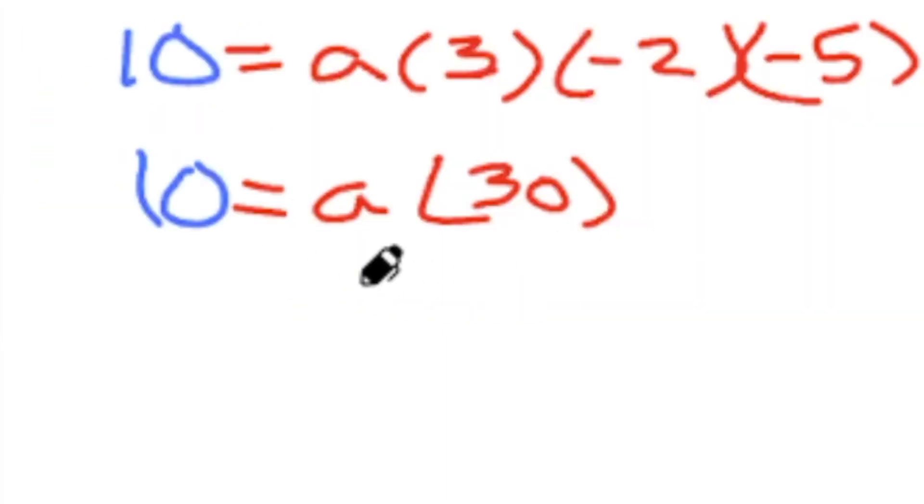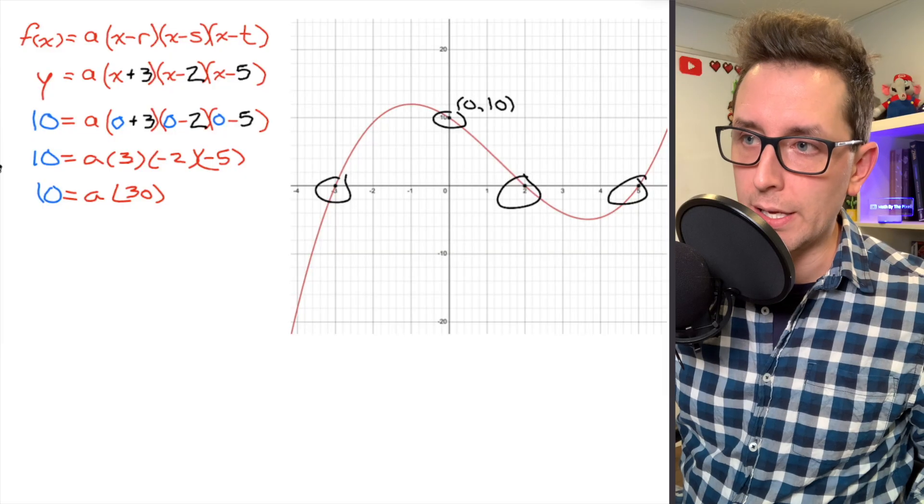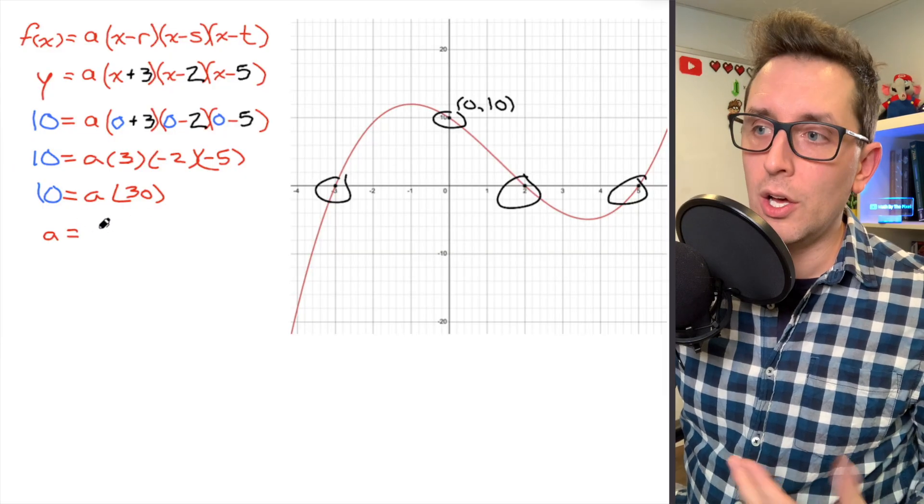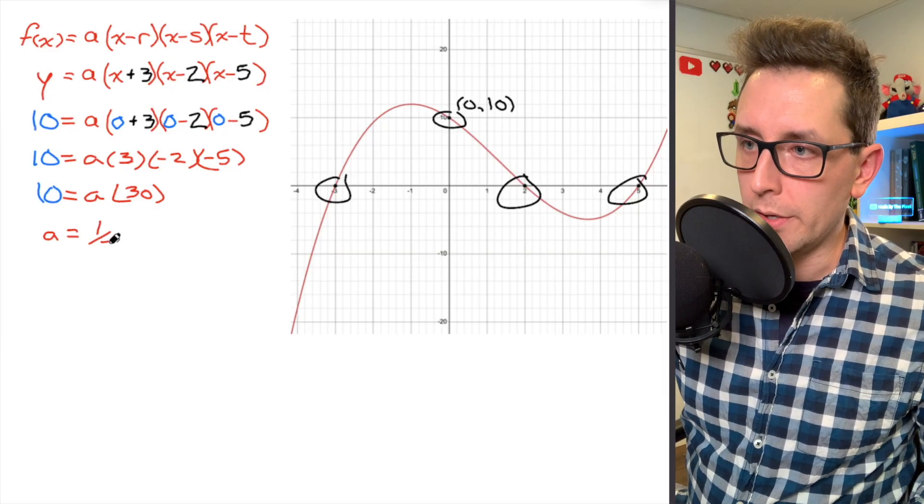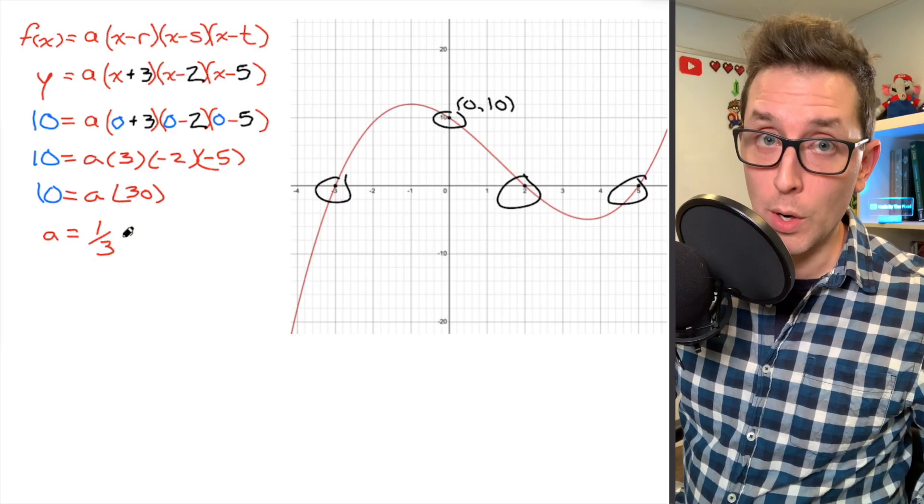And I've got a very simple one-step equation where I can solve for the value of a. I'm going to divide both sides by 30 here, and that's going to provide me with an a value of 10 over 30, also known as 1 over 3. So I'm going to write that as a simplified fraction of 1 over 3.